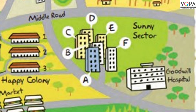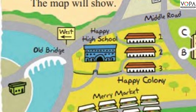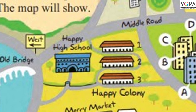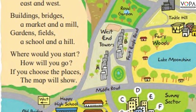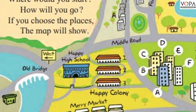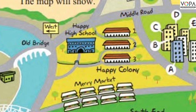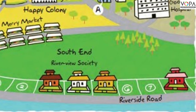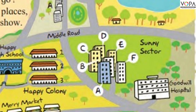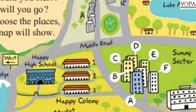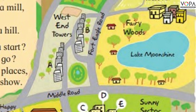Also, you can see the old bridge. Beside that old bridge, Happy High School is there. And beside Happy High School, we can see the Happy Colony. In this map, we can see different schools, different homes, different buildings, and also the bridges and lake. So, this is the tiny town.